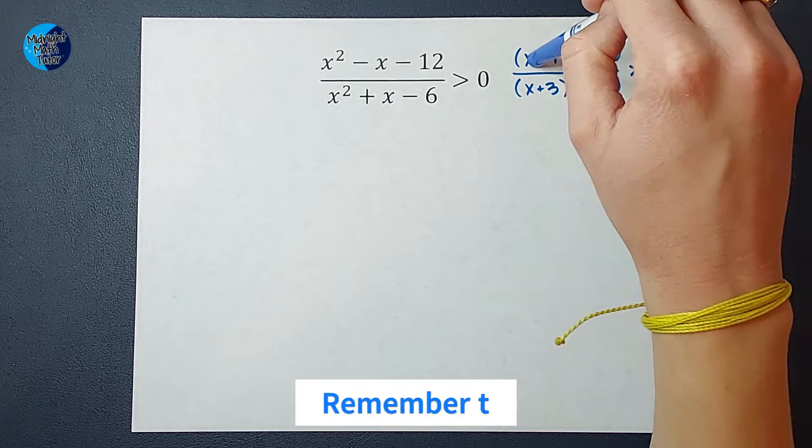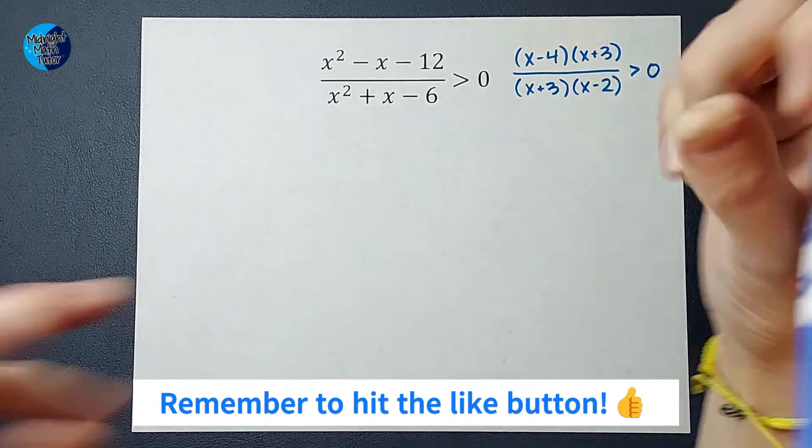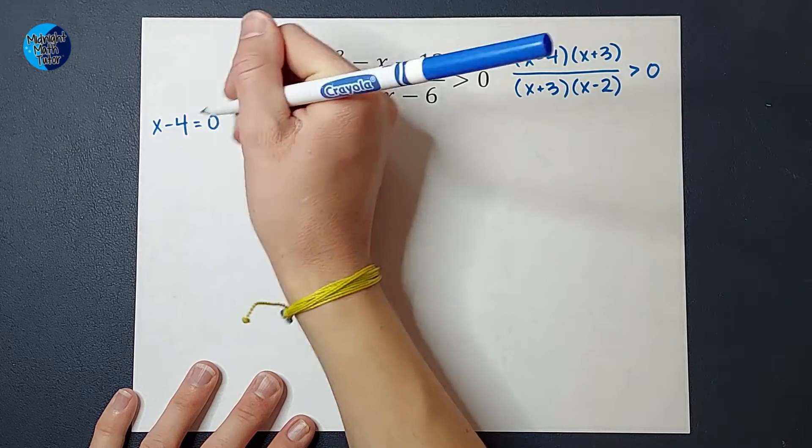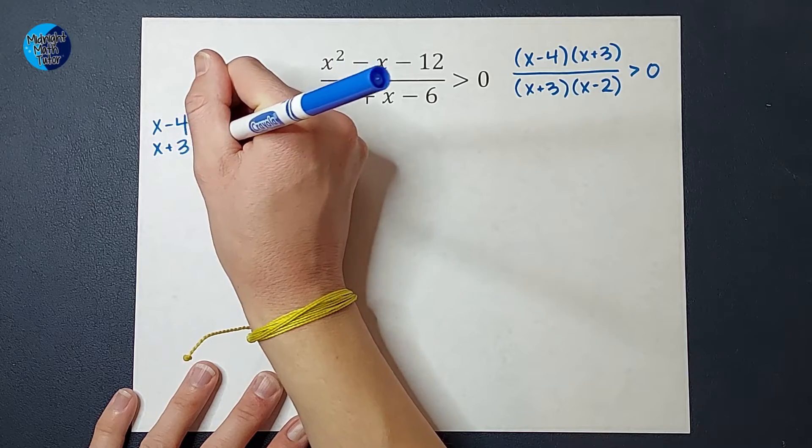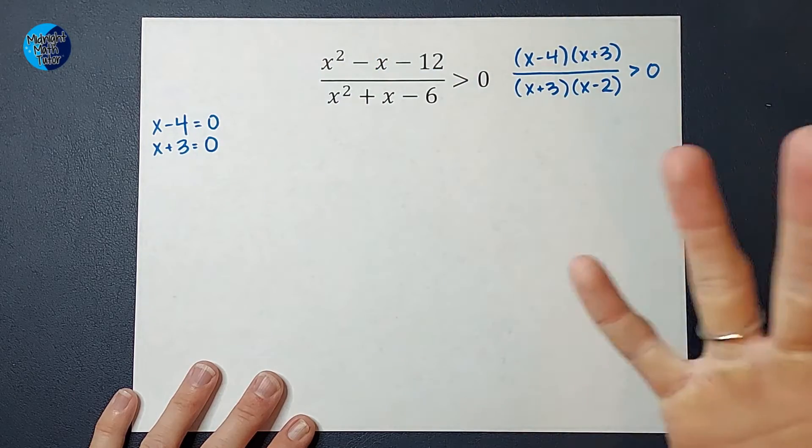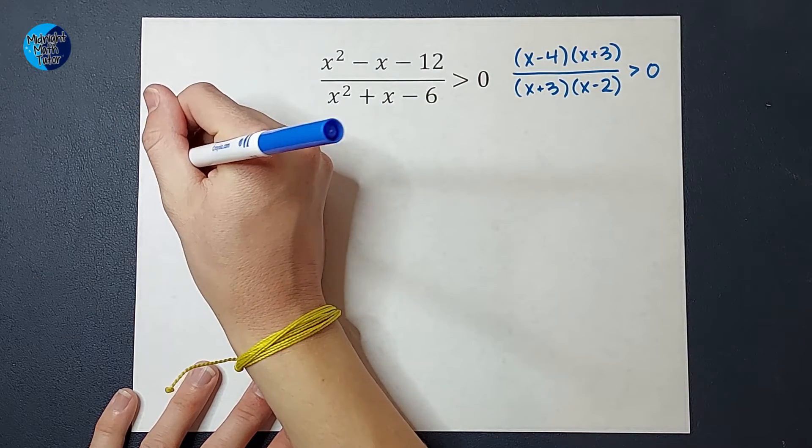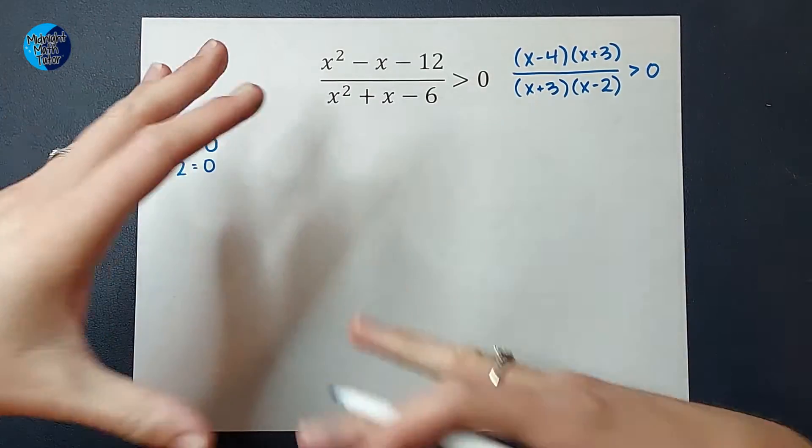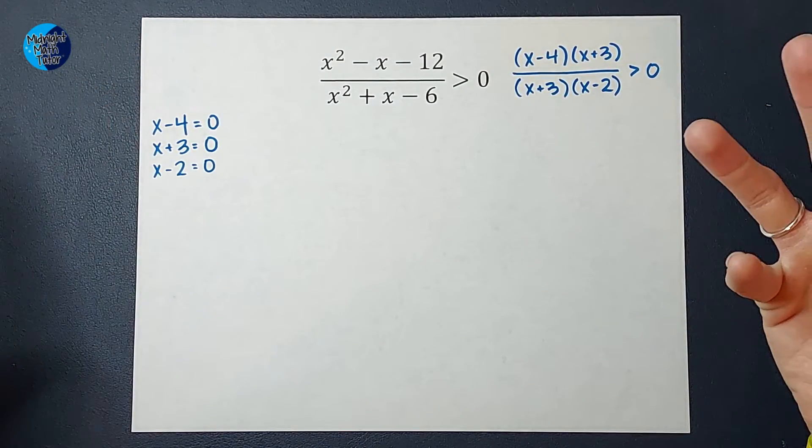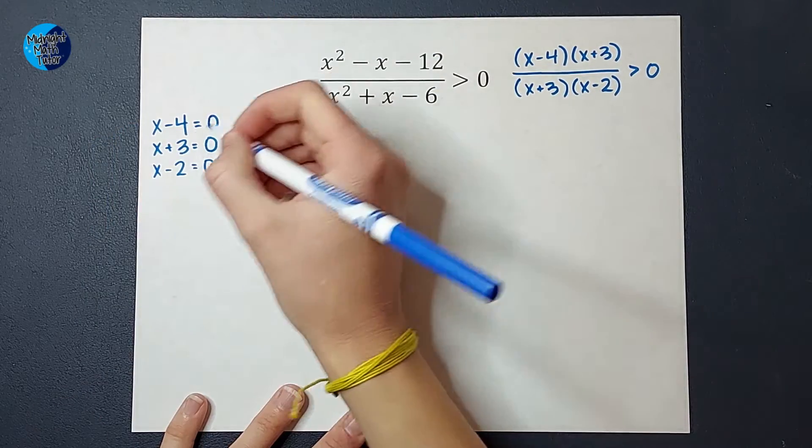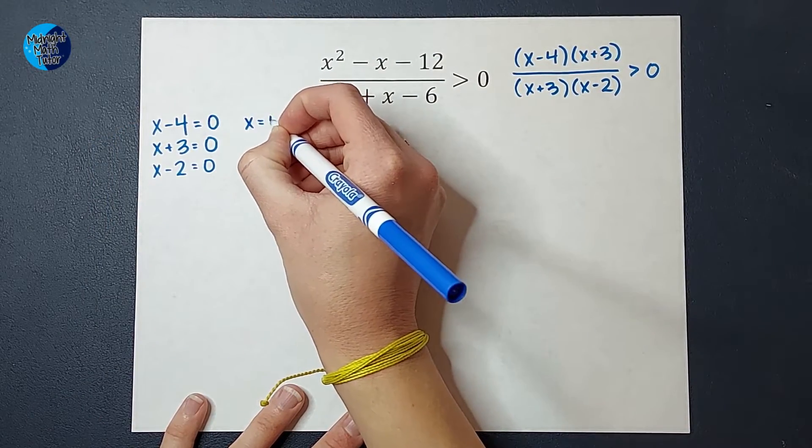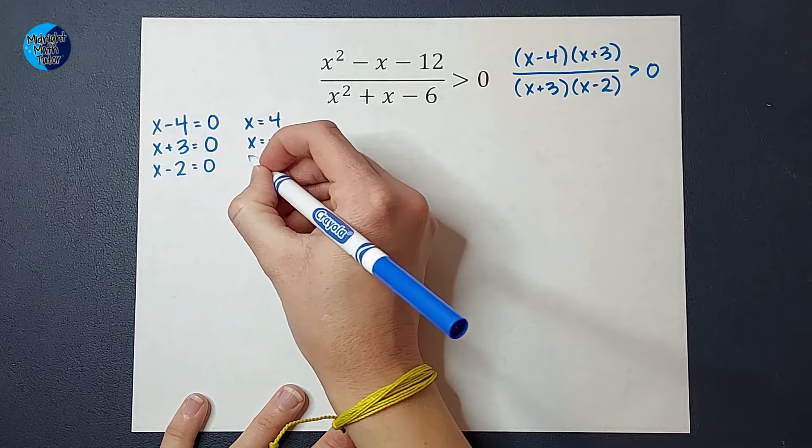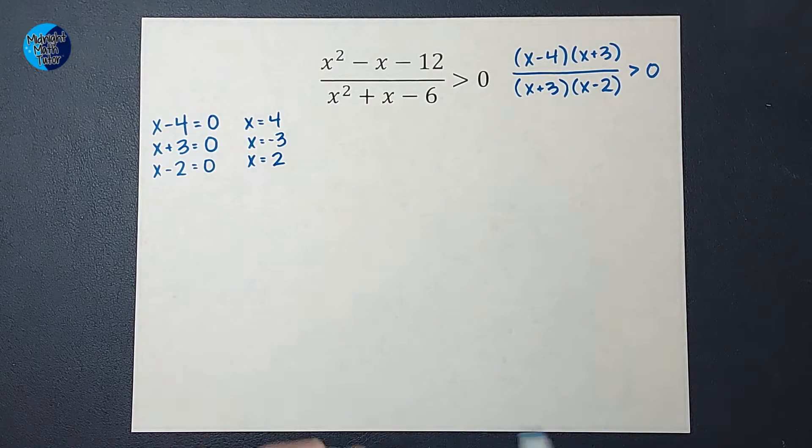What I'm going to do next is I'm going to set each of these equal to zero. So I'm going to have x minus 4 equals zero, x plus 3 equals zero. And there are two of those, right? I don't need to write them twice. And then x minus 2 equals zero. The fact that there are two of them will affect my graph, but I don't need to worry about that quite yet. All right, then I'm going to solve each of these for x. So this one I would add 4 to both sides, get x equals 4, subtract 3 from both sides, get x equals negative 3, and add 2 to both sides to get x equals 2.